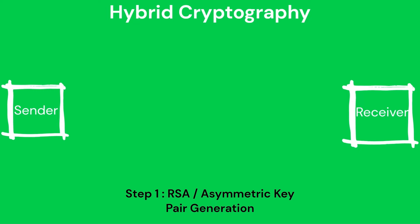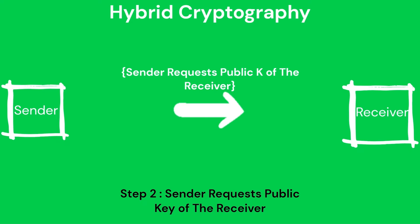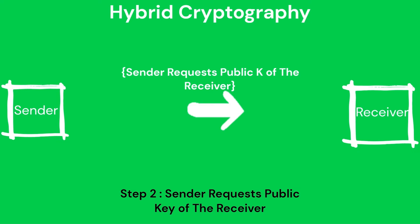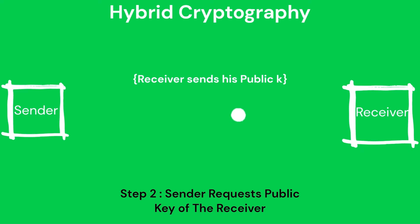Here is how a key encapsulation mechanism works. Step 1 is key generation: the receiver generates a key pair consisting of a public key and a private key. In step 2, the receiver's public key is made available to anyone who wishes to communicate with them, while the private key remains secret. In this case, the public key is made available to the sender.